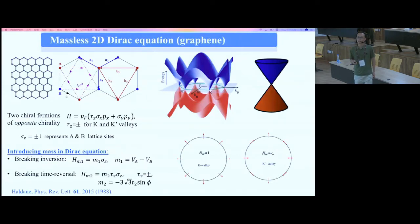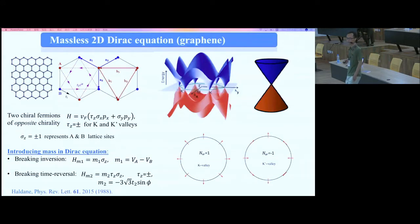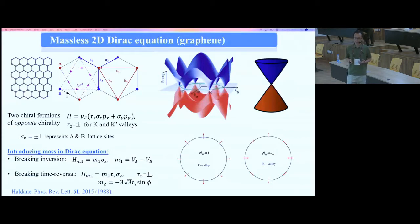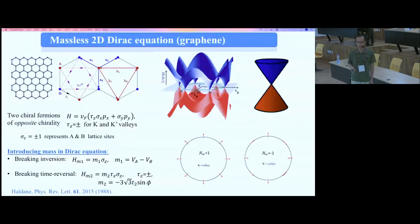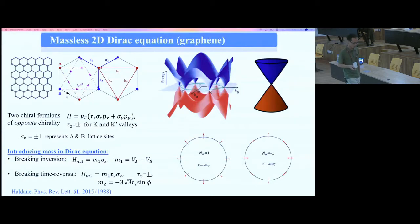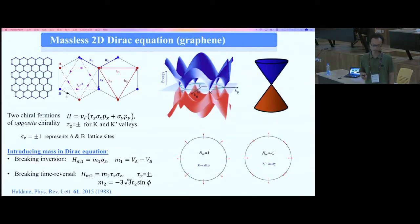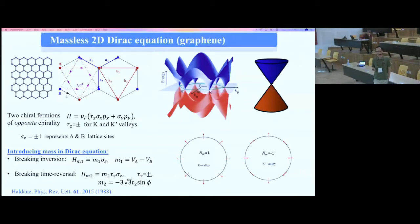People have thought about how to introduce a mass into the Dirac equation. There are two ways: the first is breaking inversion symmetry — making A and B sites have different potential energy — and the second is breaking time-reversal symmetry, which involves next-nearest-neighbor hopping with a finite phase. This arrives at a mass term proportional to both sigma-z and tau-z, describing a valley-dependent mass.